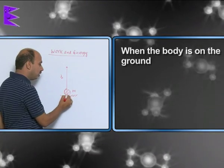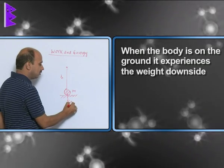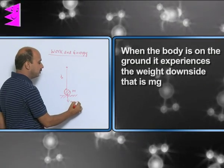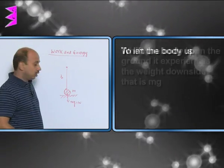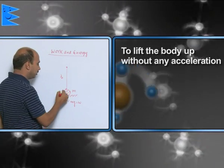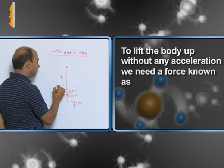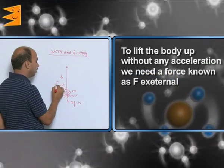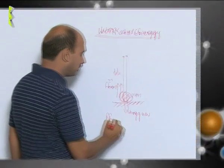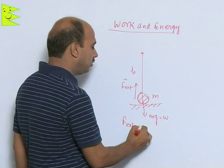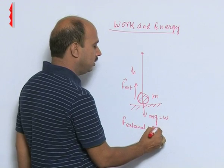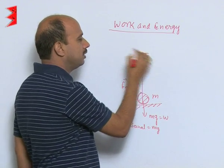See here, when the body is on the ground it experiences weight downside that is mg. To lift the body up without any acceleration we need force here, F external. F external whatever is applied, that should be equal to m into g and now you are lifting to height h.